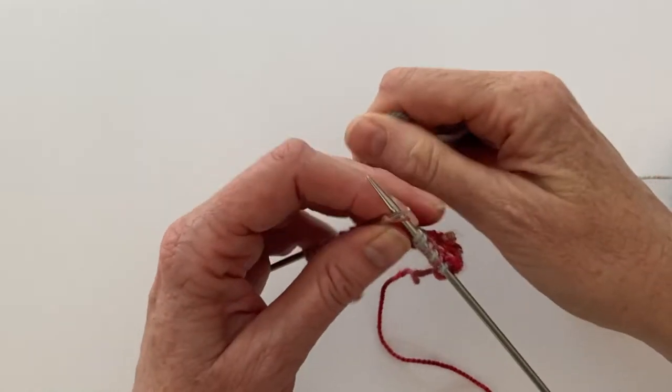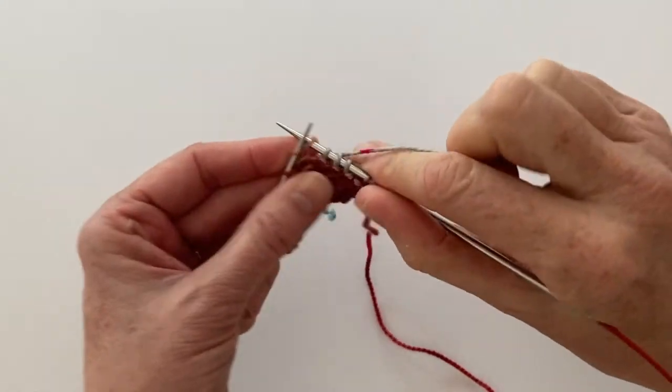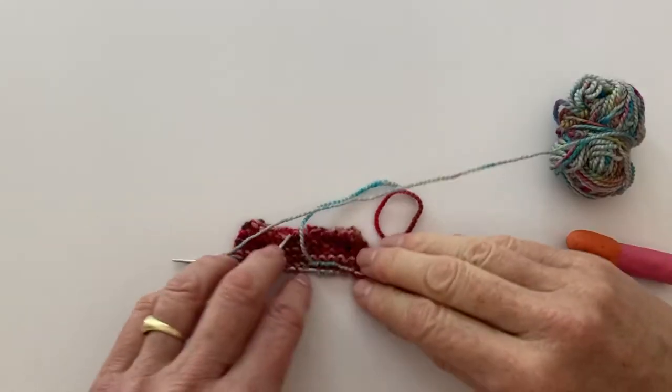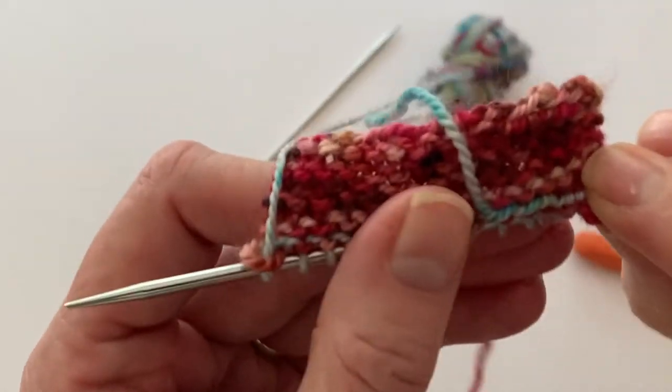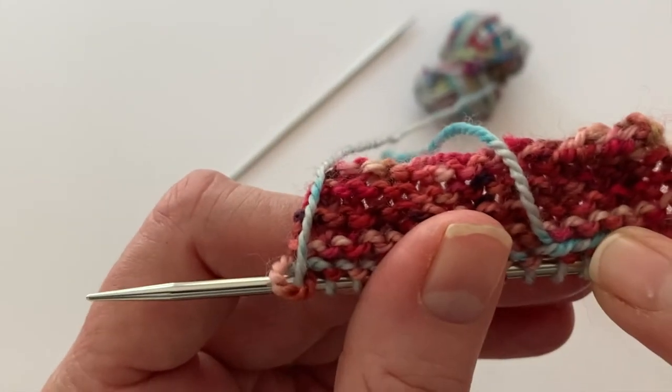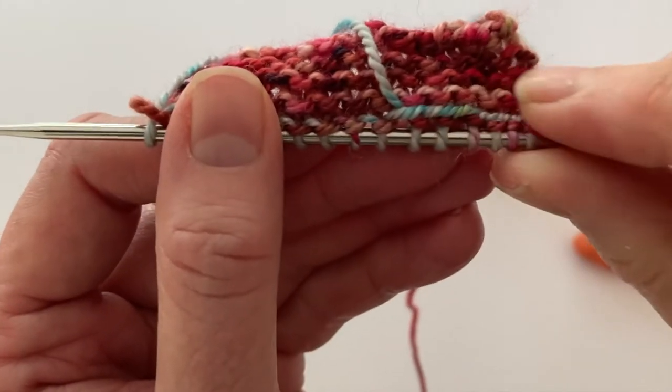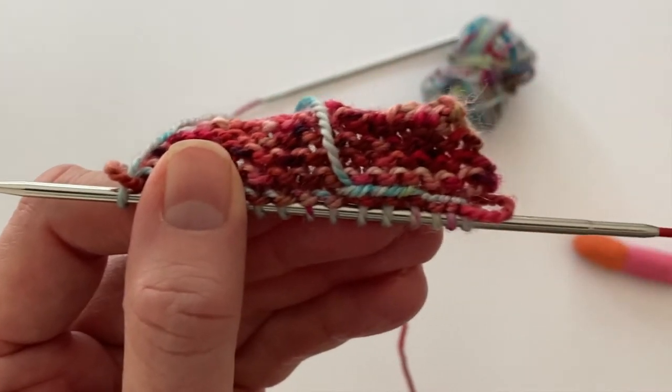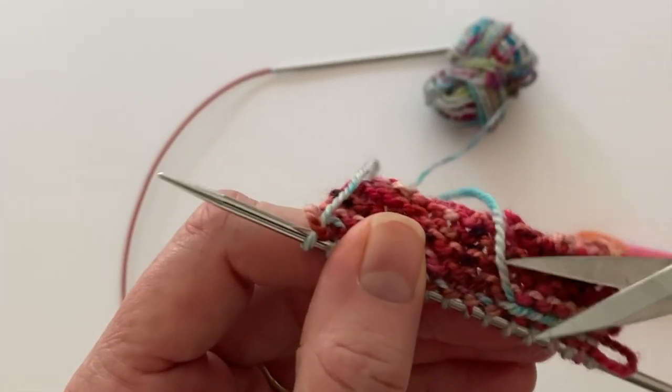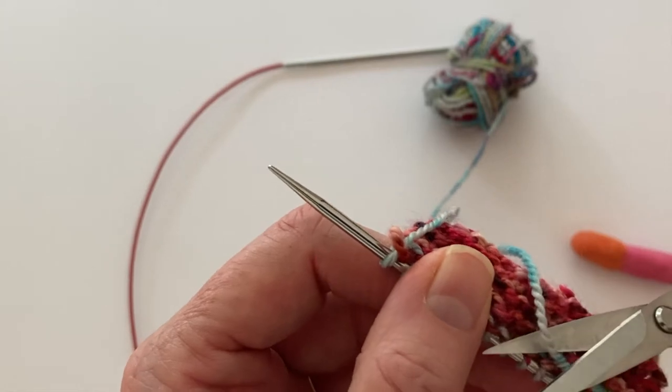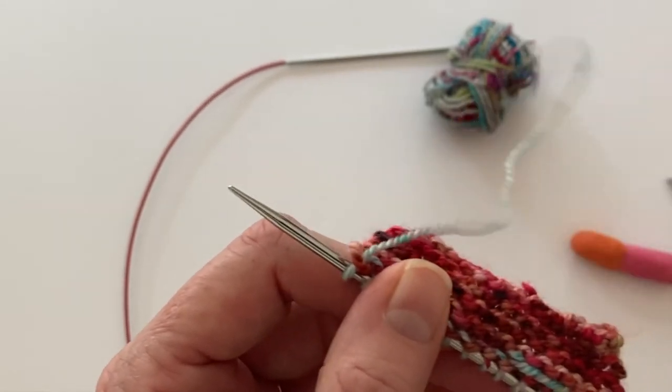Once you get to the end of the row, you can just come back and cut it off. You can see here how it's caught down in that row and I'm just going to take my scissors and snip it off.